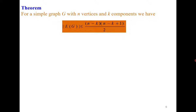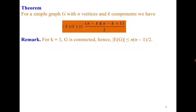The next result: for a simple graph with n vertices and k components, the maximum number of edges is (n − k)(n − k + 1)/2. If there is only one component, the maximum is n(n − 1)/2, which corresponds to the complete graph. The proof involves summing the maximum edges for each component and applying an algebraic property. Since the proof is not heavily graph-theoretical, we note the result without full detail.